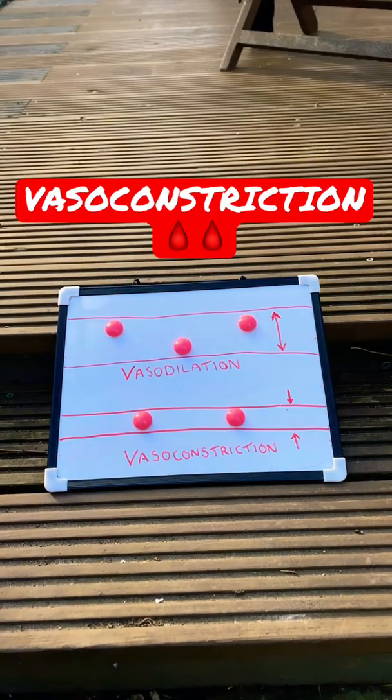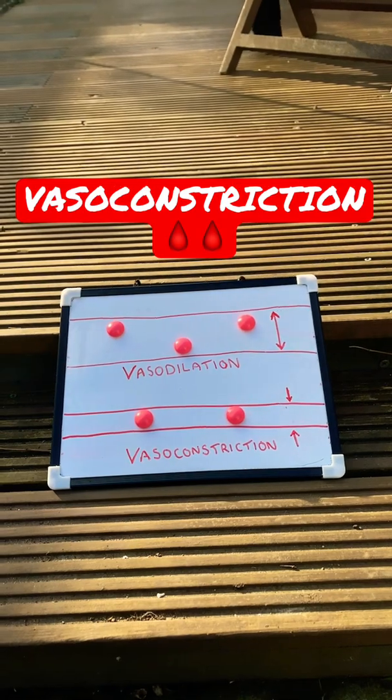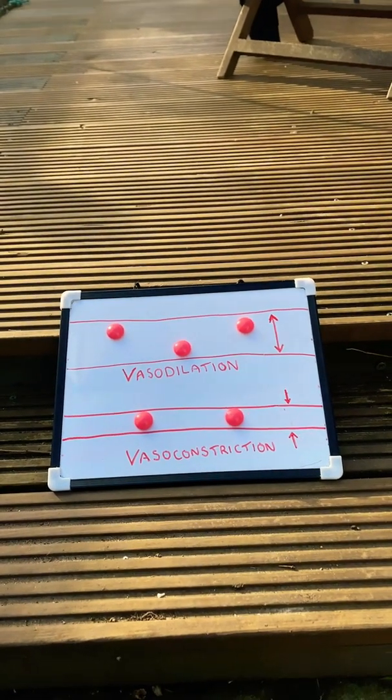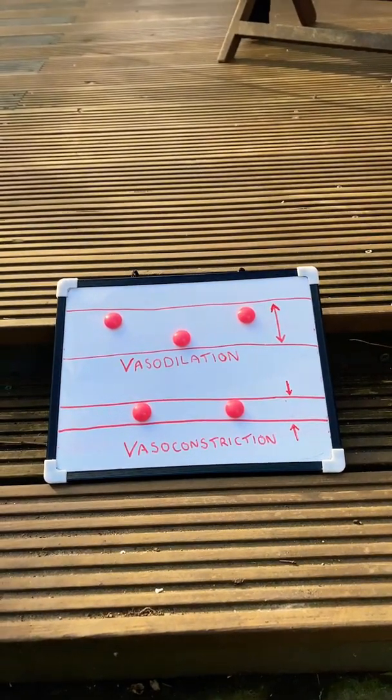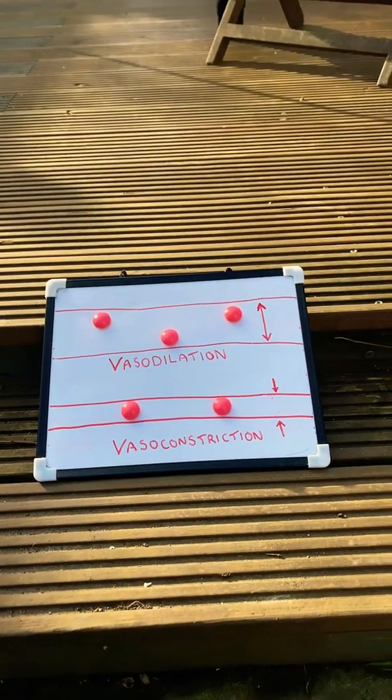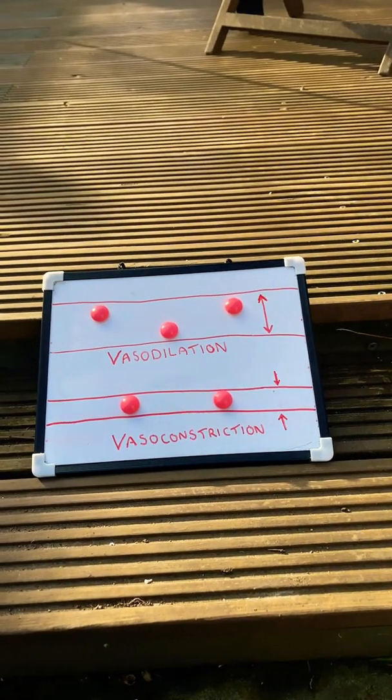Following exercise, vasoconstriction takes place and this means that the walls of the artery move closer together, which in turn reduces the diameter of the artery, which means less blood and less oxygen can move through it. This is necessary because at this point muscles do not require as much blood or oxygen.